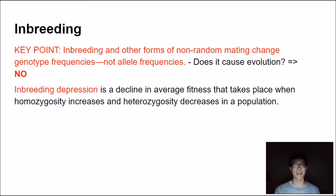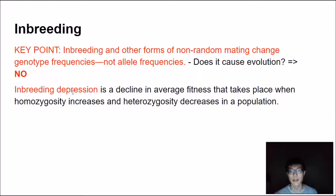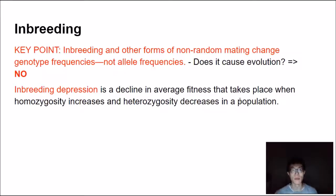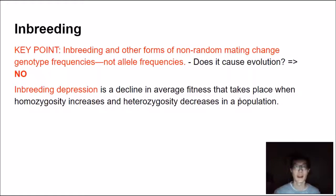Inbreeding depression is a decline in average fitness that takes place when homozygosity increases and heterozygosity decreases in the population. There are situations where the heterozygote has a heterozygote advantage, whereas homozygous individuals may not be as advantageous. Overall, because you're inbreeding, you cause a decline in genetic diversity and a reduction in heterozygotes, which can have a detrimental effect on survival, reproduction, and fitness of the population as a whole.